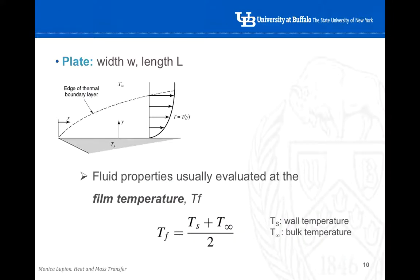The fluid properties are usually evaluated in all these equations at the film temperature, which is the average between the wall temperature at the boundary and the bulk temperature T-infinity.